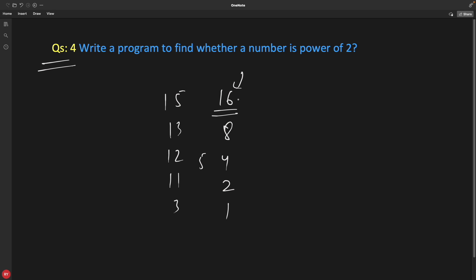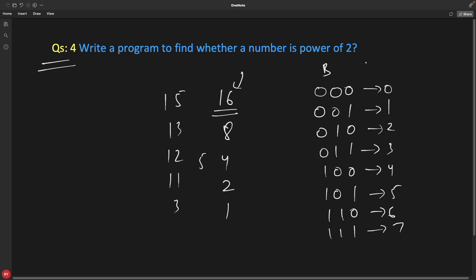There are different ways you can find whether a given number is power of 2 or not, but I'm going to tell you one simple trick using bit manipulation. Let's create this table with binary representation and decimal representation.